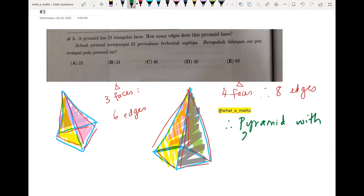So to answer this question, therefore a pyramid with 23 triangular faces will have 23 times 2 equals to 46 edges. So the answer is C.